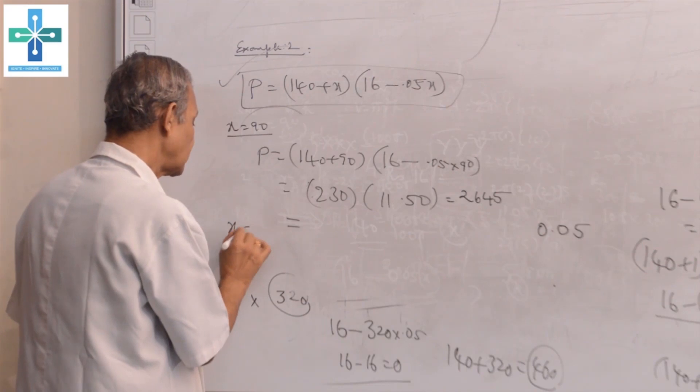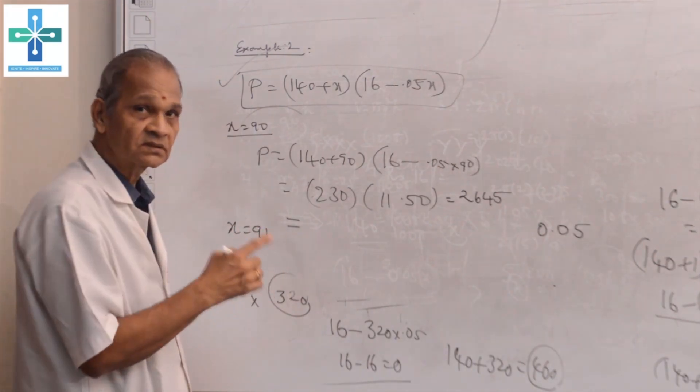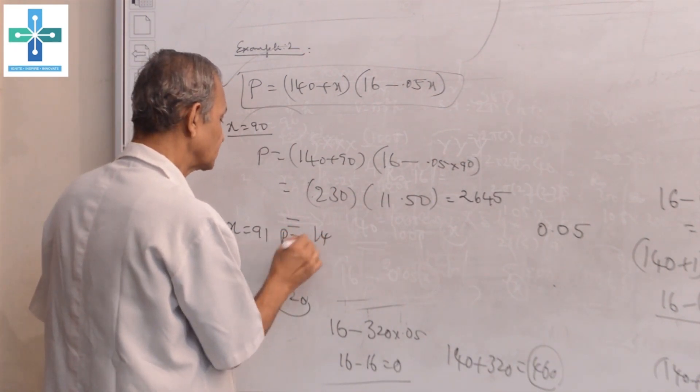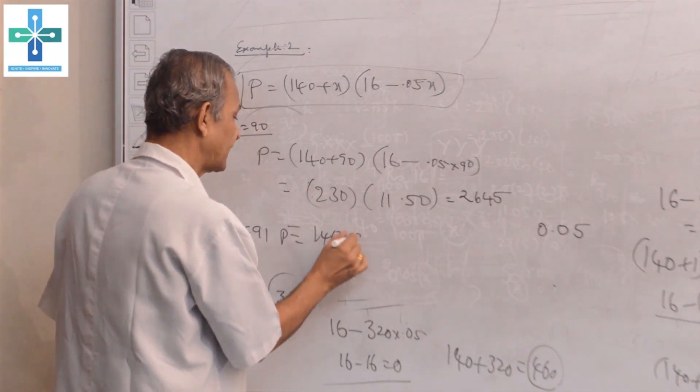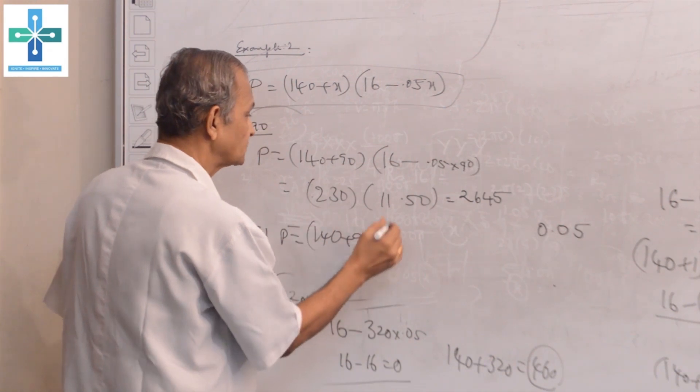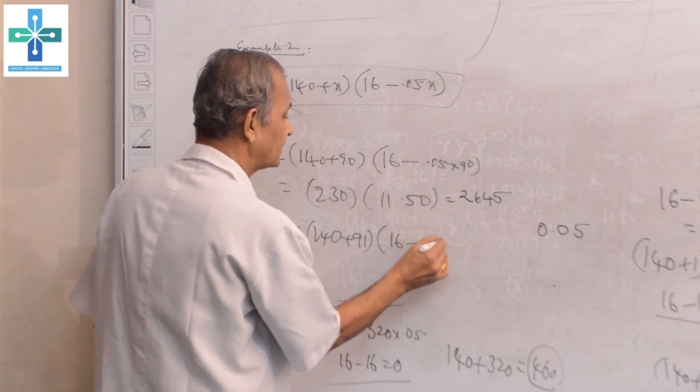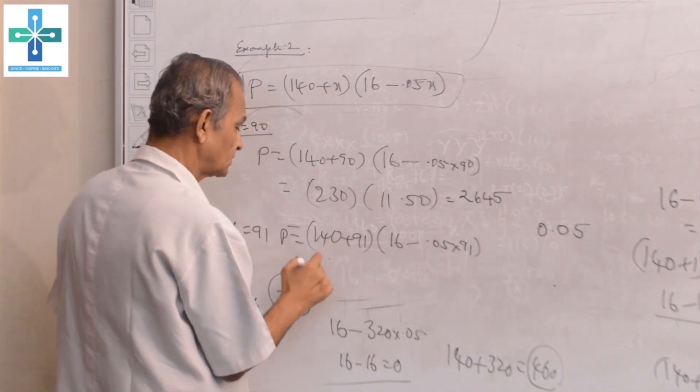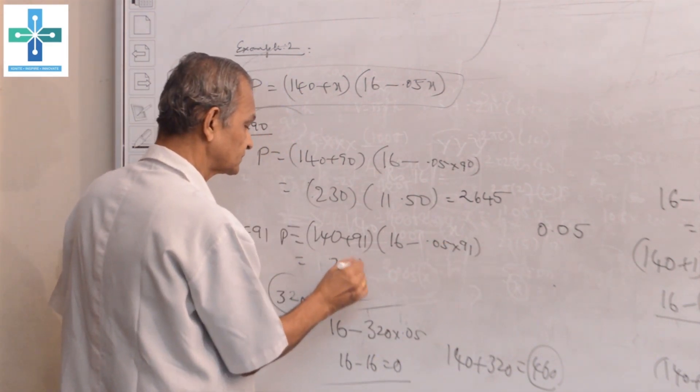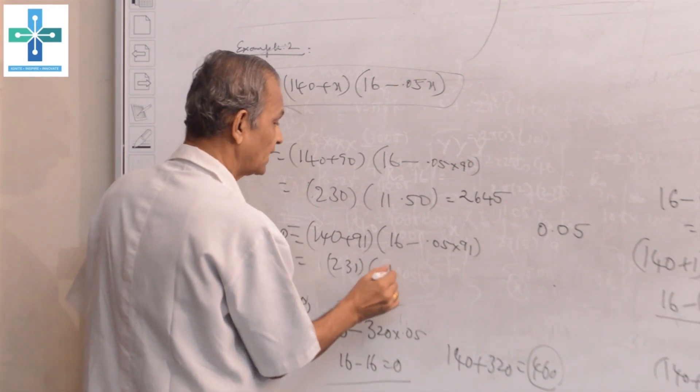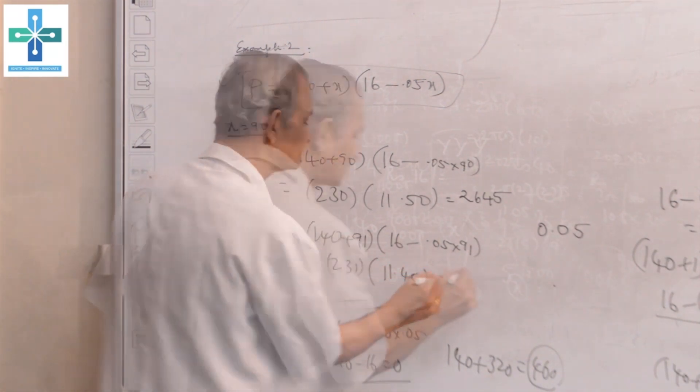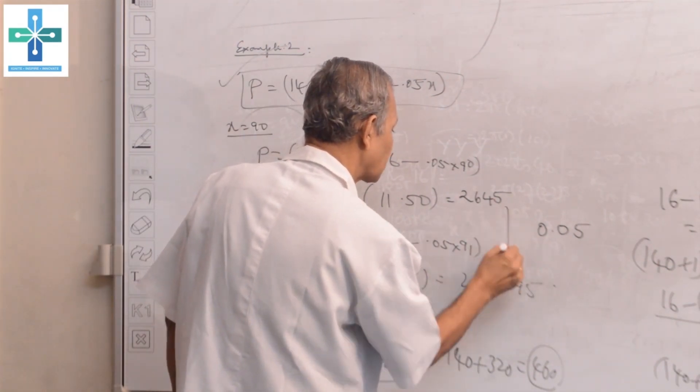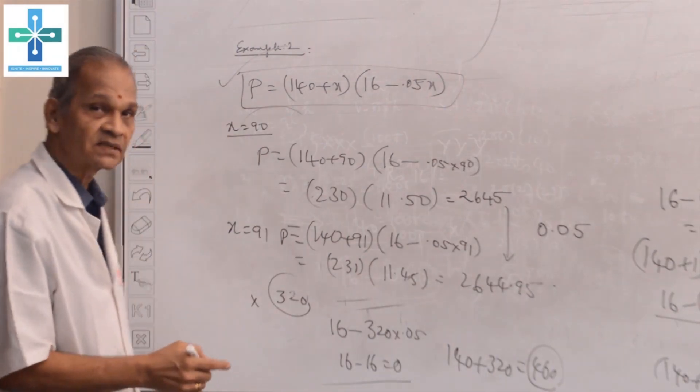Suppose if X = 91, just one person more, then profit will be (140 + 91) into (16 - 0.05 into 91) equals 231 into 11 rupees 45 paisa, which is 2,644 rupees 95 paisa. The profit is now decreased by 5 paisa.